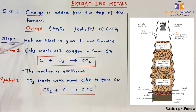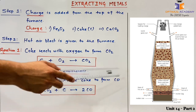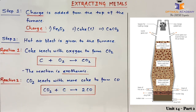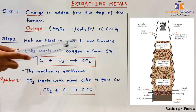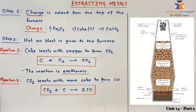Step 2: hot air blast is given to the furnace from the bottom. You can see there are two inlets for the supply of hot air to the furnace. The first reaction that takes place is that coke reacts with oxygen in the hot air to form carbon dioxide: C + O2 → CO2.